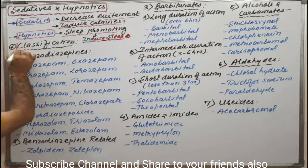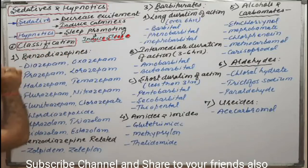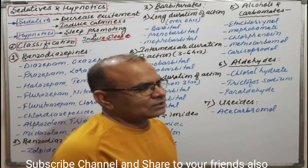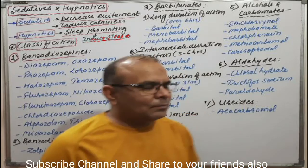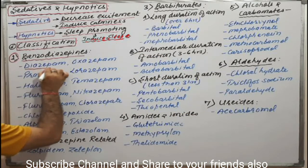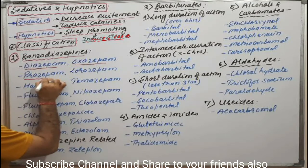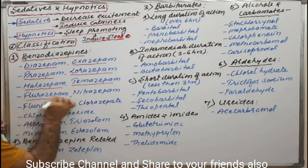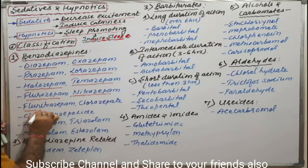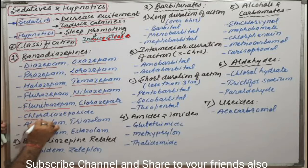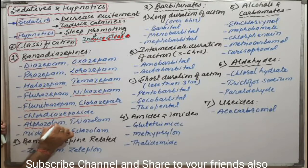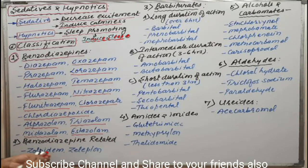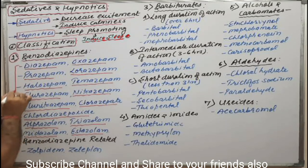Now for classification from a medicinal chemistry point of view: the first category is benzodiazepines. Examples include diazepam, oxazepam, prazepam, lorazepam, halazepam, temazepam, chlorazepam, nitrazepam, flunitrazepam, clorazepate, chlordiazepoxide, clorazepam, alprazolam, triazolam, midazolam, and estazolam.